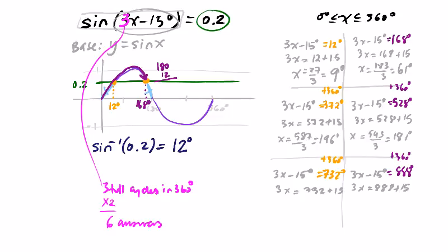So far, all these are within the 0 to 360 range. This one here on the bottom, 732 plus 15 gives us 747, and then divided by 3, 249. Still within the range. And the last one, 888 plus 15 divided by 3, 301 degrees.